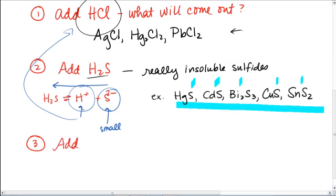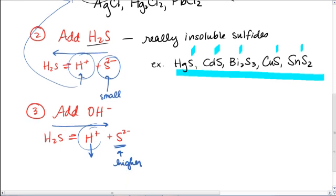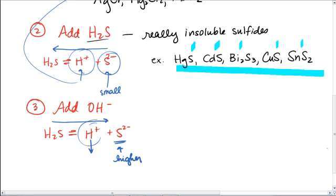We might go ahead and add, on top of all of that stuff, some hydroxide. Well, if you think again back to this, because that's already in solution, the hydroxide, of course, is going to start removing the hydrogen ion concentration, which is going to cause it to shift to the right. And so now, the concentration of S2- is going to get higher. So now, that's going to cause two things to precipitate out.